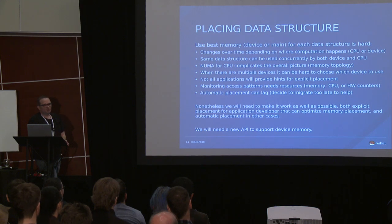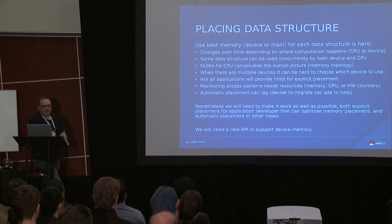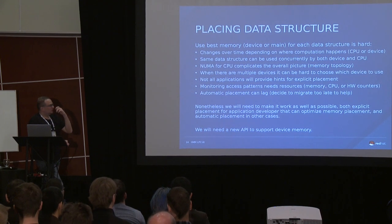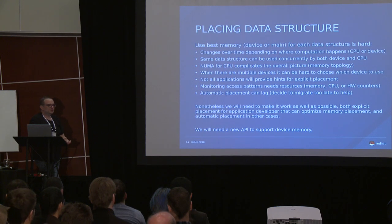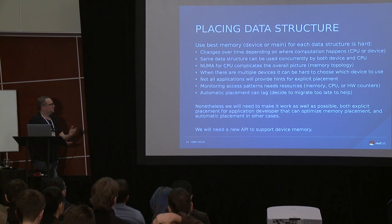If you can move memory around, it's because you want to use the best memory for what you're doing. When you're working on a data structure on the GPU, you want to use GPU memory because that's where you'll get the most performance. So memory location will change over time — if you're working on the CPU you want the fastest CPU memory available, and if you're working on a device you want device memory.